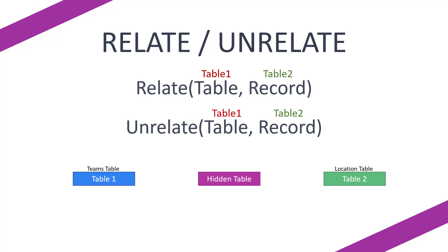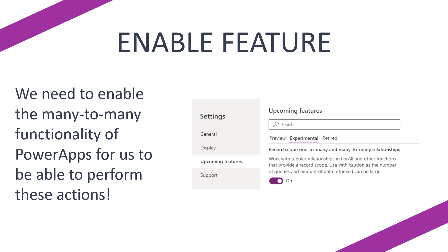Before we move on to the demo, let's look at enabling features. Out of the box, PowerApps does not work with one-to-many or many-to-many relationships. You have to go into Settings, click on Upcoming Features, and click on Experimental. While it is an experimental feature, this is the only way you're going to be able to work with many-to-many relationships. Once you're in Experimental, scroll down to 'Record scope one-to-many and many-to-many relationships' and turn that on. Once you do this, you'll be able to submit and display many-to-many relationship data.